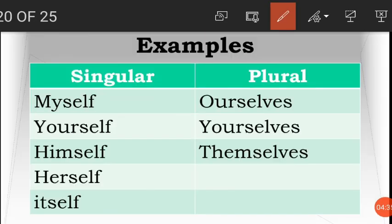Now, which are the examples of reflexive and intensive pronouns? Both types use the same forms: myself, yourself, himself, herself, itself — these are the singular forms.